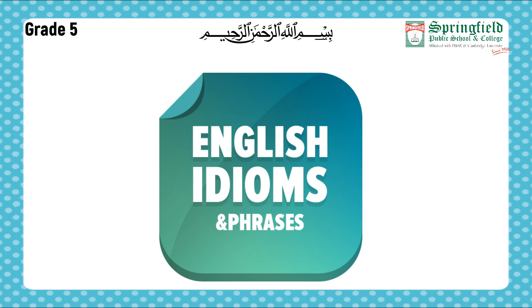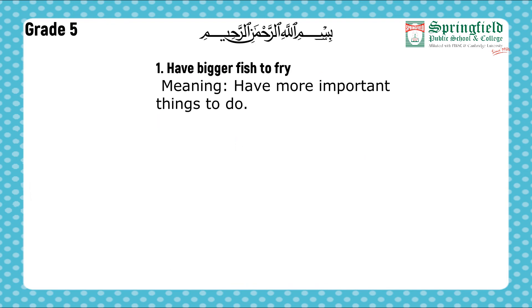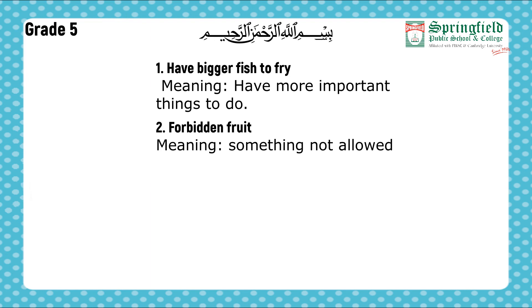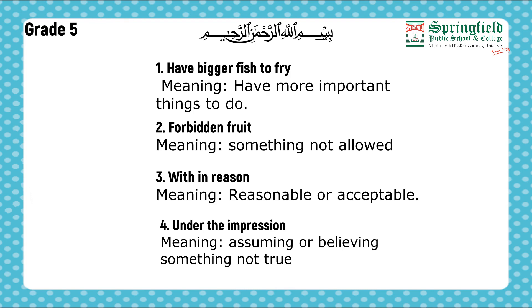So those were our first four idioms. Let's review them one more time. The first idiom is 'have bigger fish to fry' — means to have more important things to do. The second is 'forbidden fruit' — means something banned or not allowed. The third is 'within reason' — means that is reasonable or acceptable. And the fourth is 'under the impression that' — means having an idea or belief about something which is not actually true.